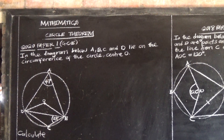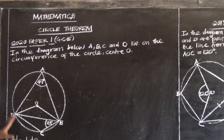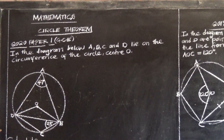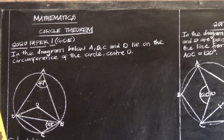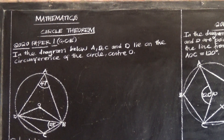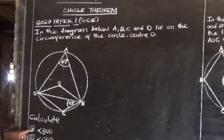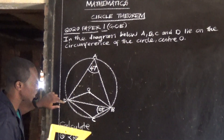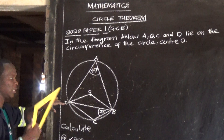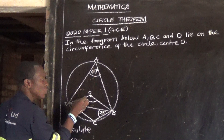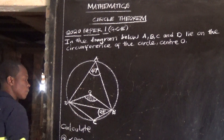A cyclic quadrilateral is a quadrilateral which touches four points of a circumference. So this quadrilateral ABCD is a cyclic quadrilateral, and we have our center O. The first question asks us to find angle BOD. So I identify where angle BOD is — this is what we want to find.